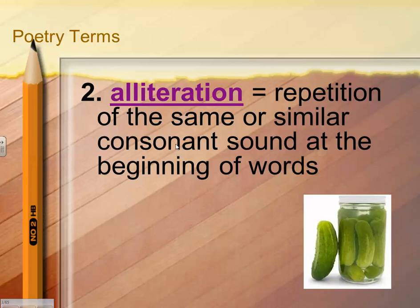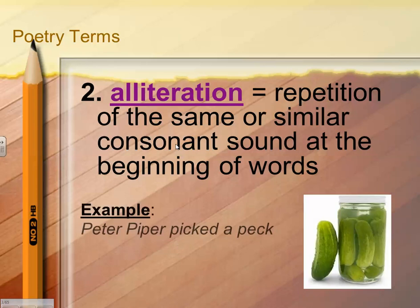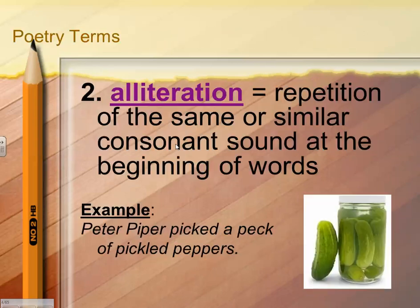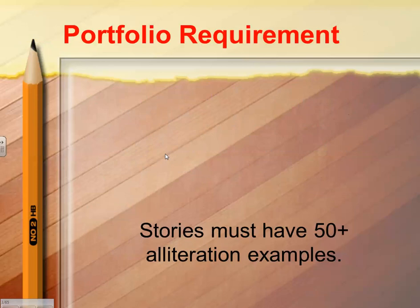We have vowels because they're the most used sound in the English language. So if it's not a vowel, it's a consonant. For example, an example of alliteration is Peter Piper picked a peck of pickled peppers. It's that same P sound over and over at the beginning of words, so it is alliteration.